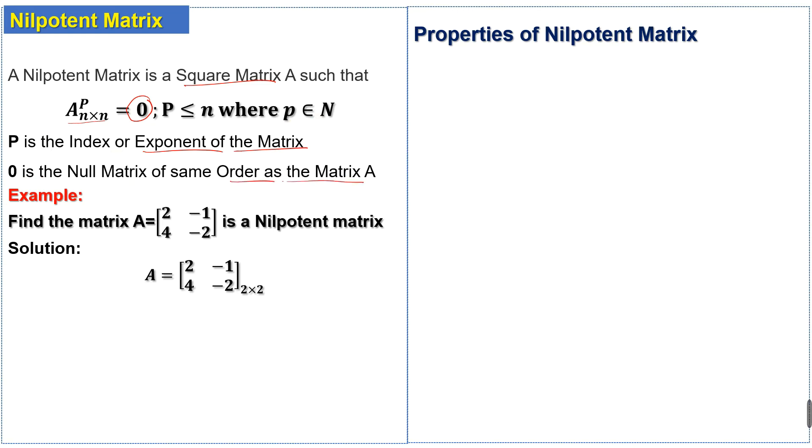This is the definition of the nilpotent matrix. A matrix A is said to be nilpotent if the square matrix A to the power P is equal to 0.